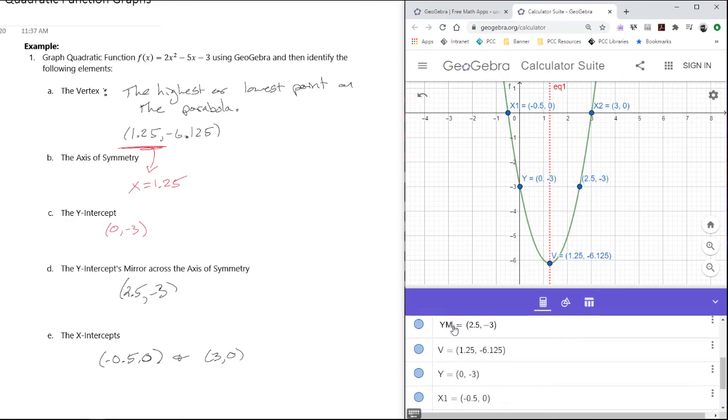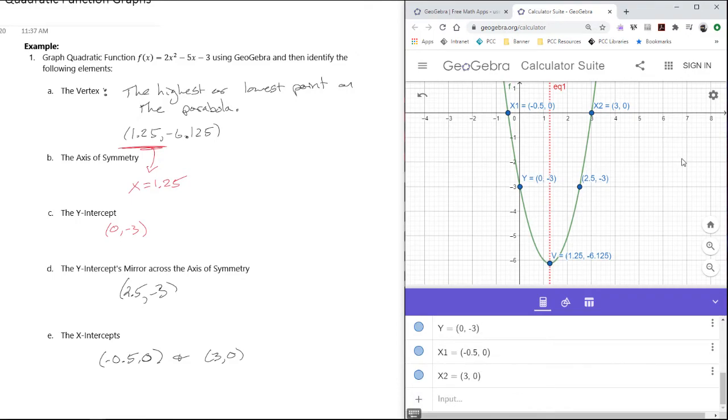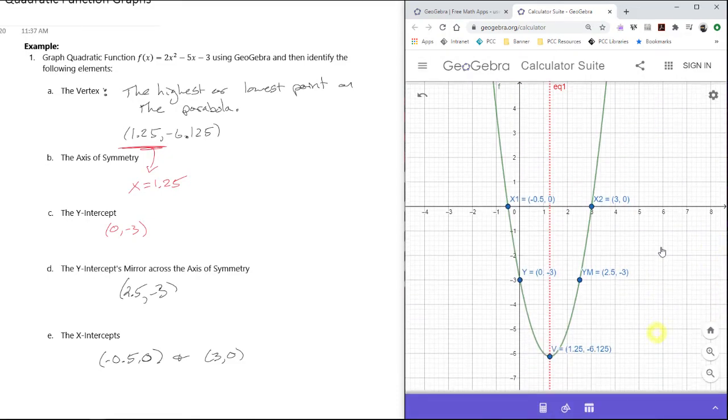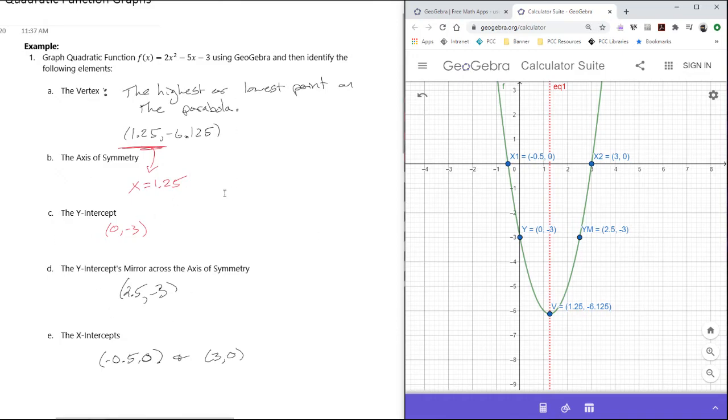And for that (2.5, -3), let's change its name. Let's call this y-mirror, right? YM. And for this point, I'll also show that label to make that a little bit more clear here when we put this into the OneNote, into the work that we're doing over here on the left.